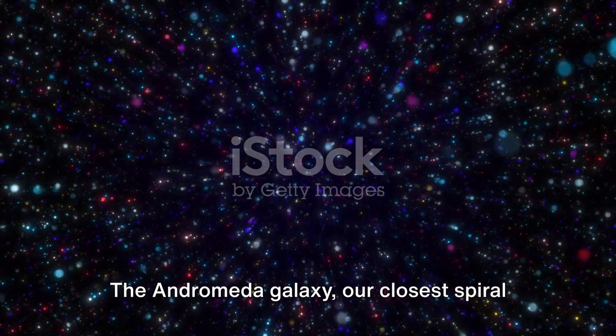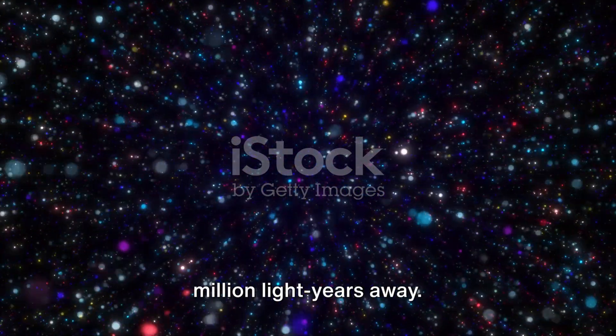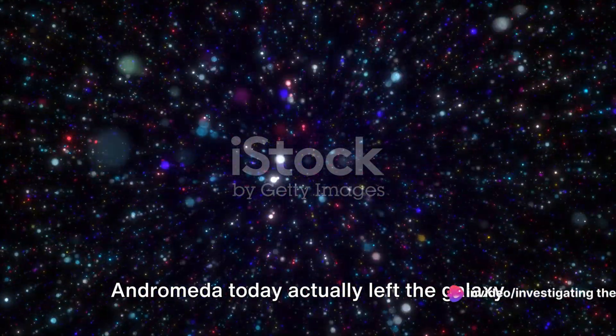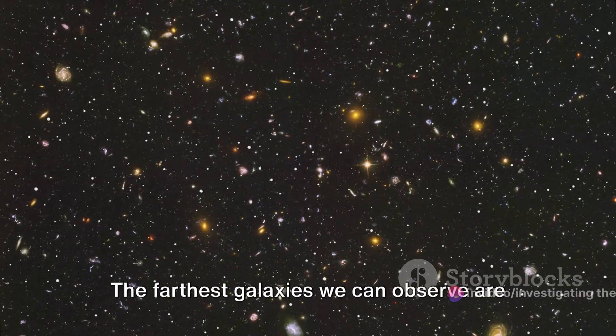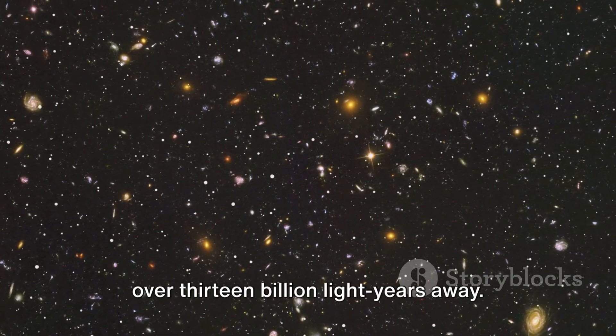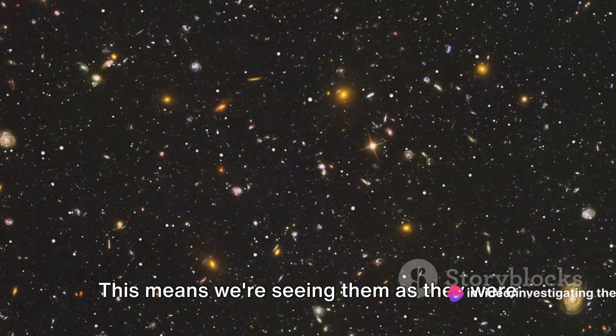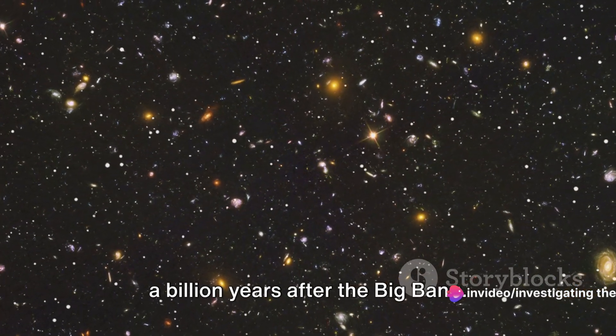The Andromeda galaxy, our closest spiral galaxy, is a staggering 2.5 million light years away. That means the light we see from Andromeda today actually left the galaxy 2.5 million years ago. Let's push the boundaries further. The farthest galaxies we can observe are over 13 billion light years away. This means we're seeing them as they were when the universe was just a baby, roughly a billion years after the big bang.